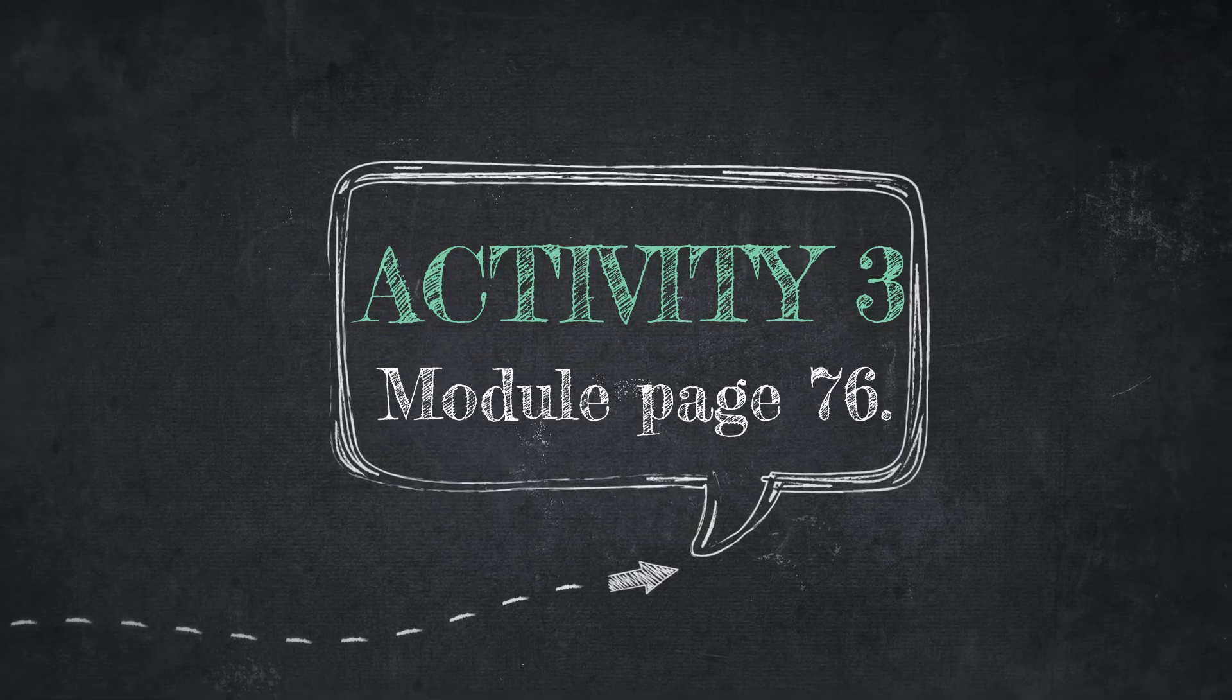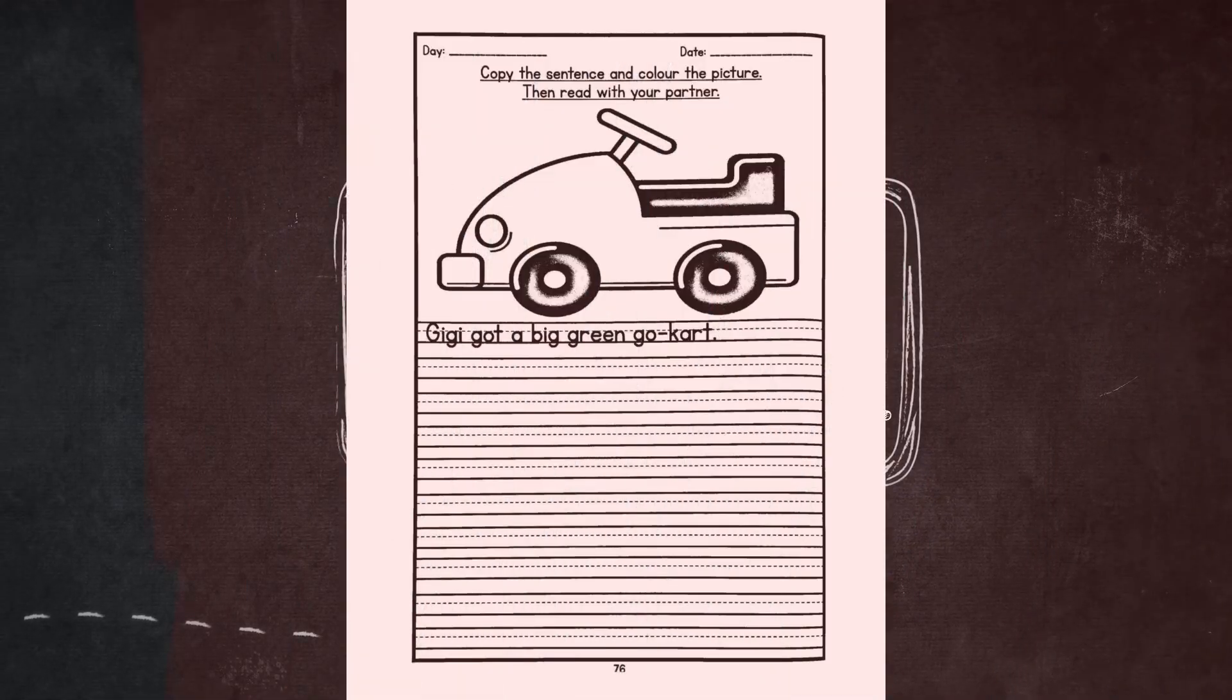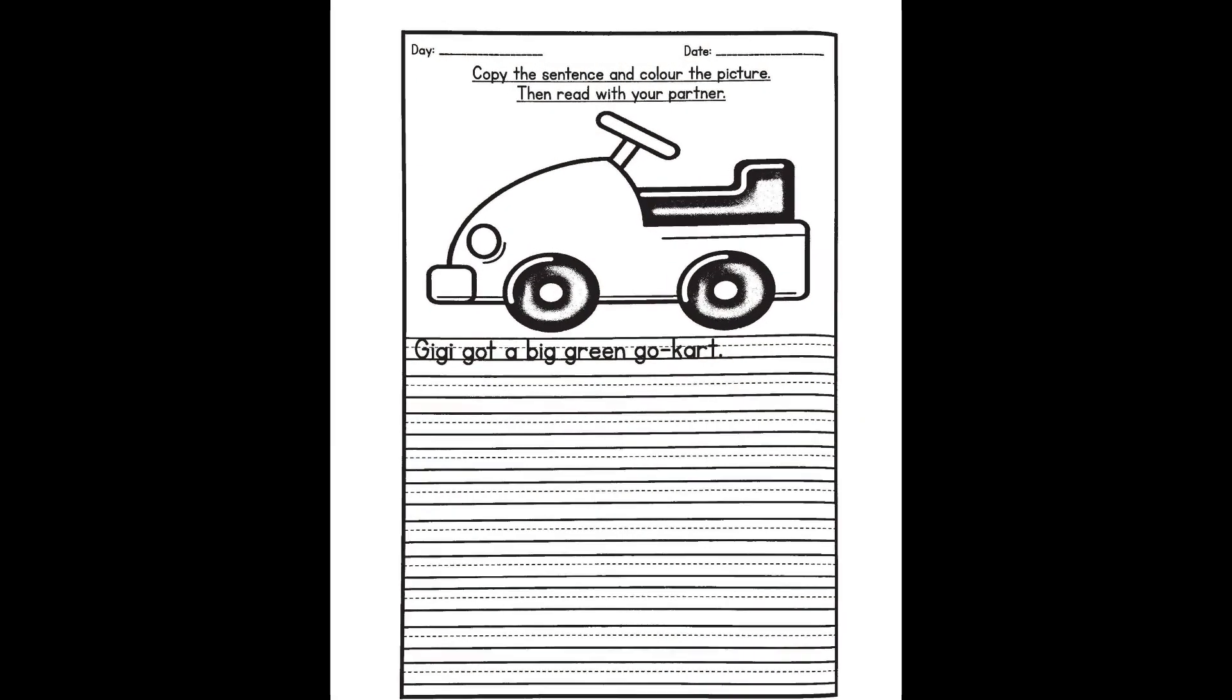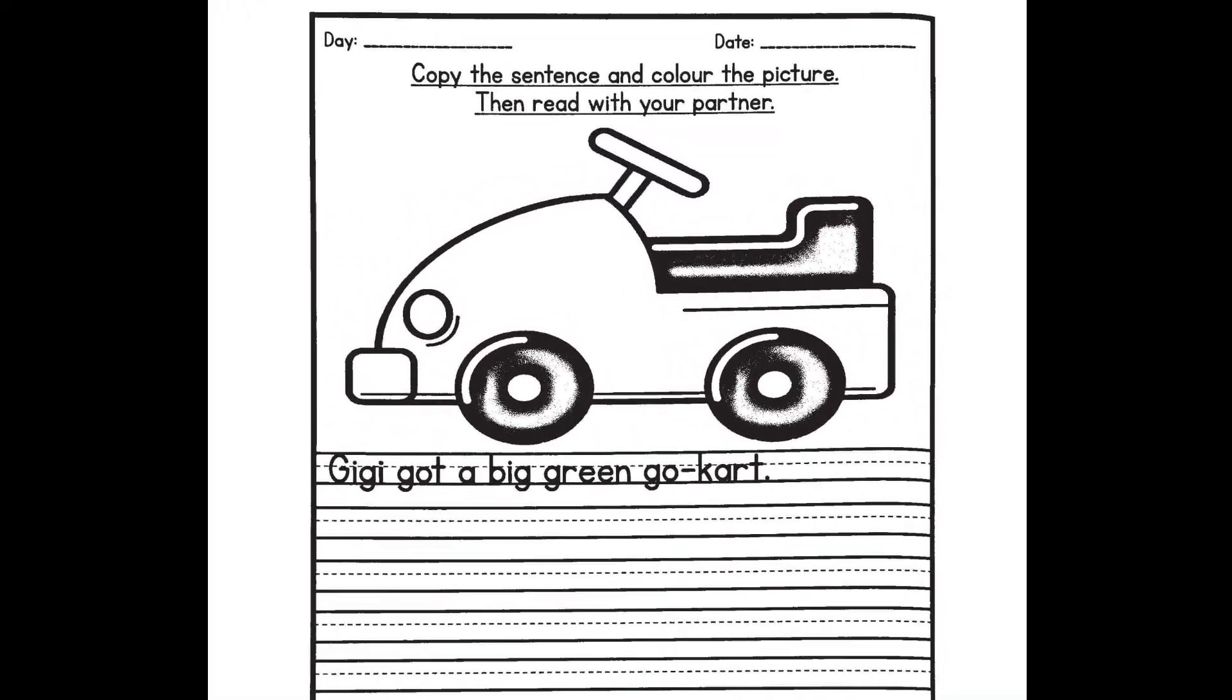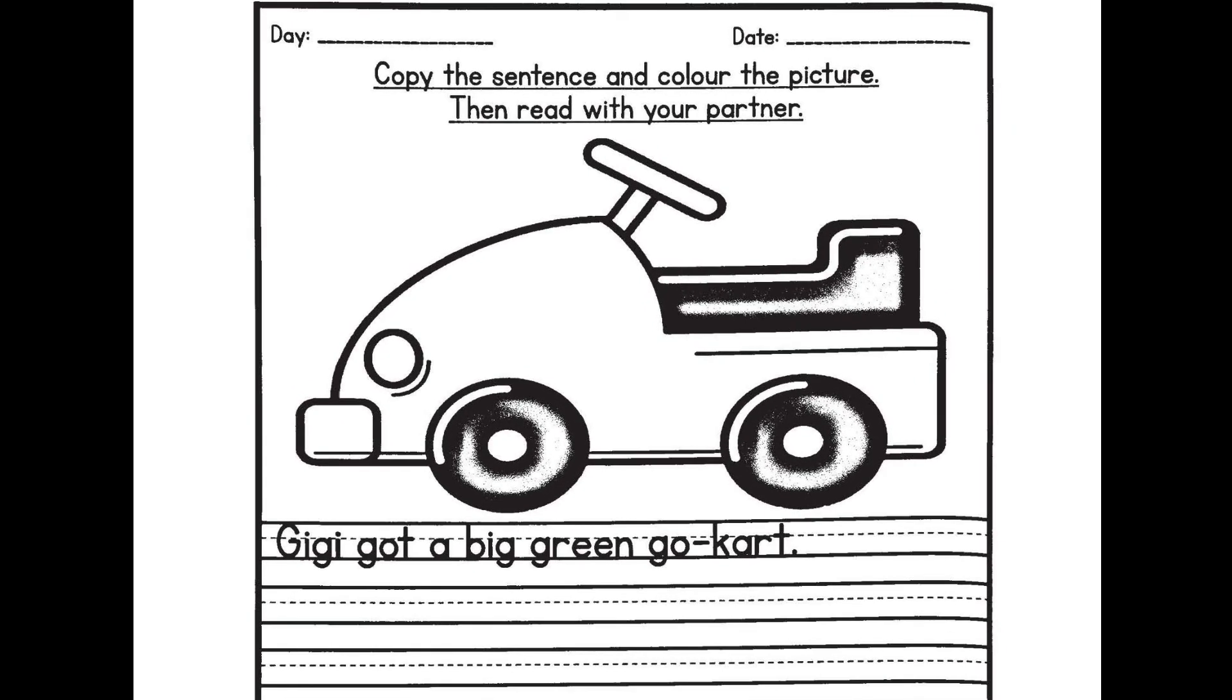Activity 3, Module Page 76. Copy the sentence and colour the picture. Then, read. Follow me. Gigi Got a big green go-kart. Gigi Got a big green go-kart.